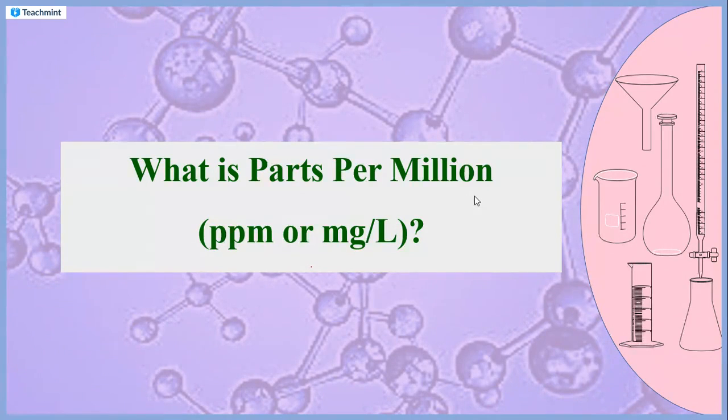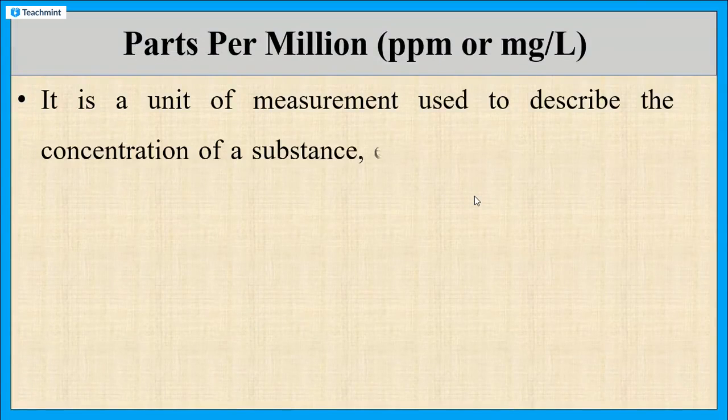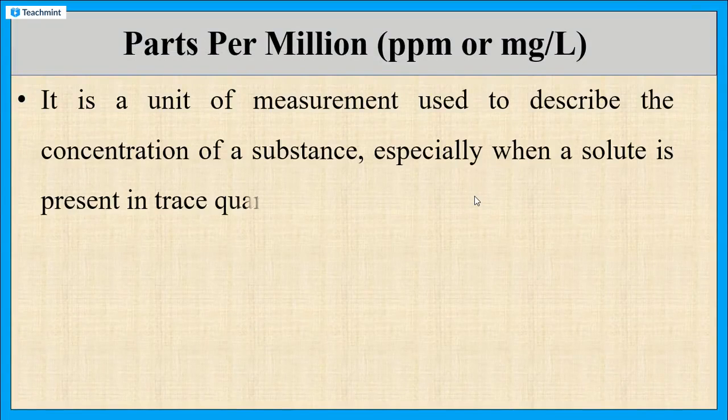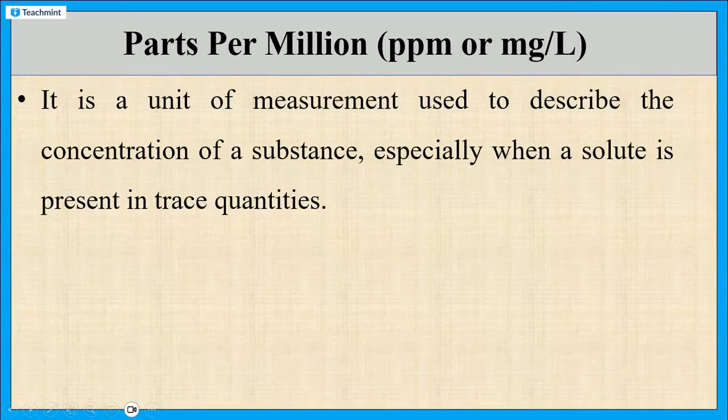Now, let us see the definition of parts per million. PPM is the unit of measurement used to describe the concentration of one substance in a mixture or solution, especially when the solute is present in very small quantities.